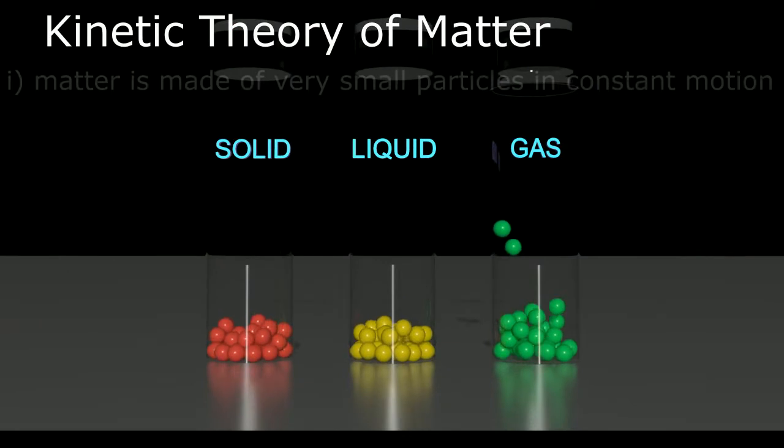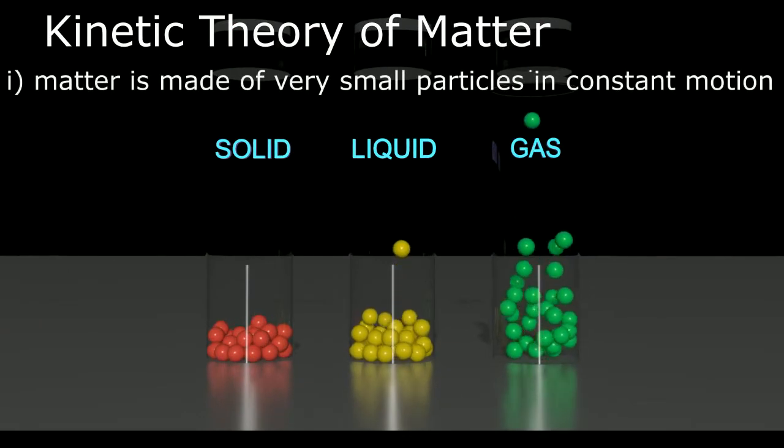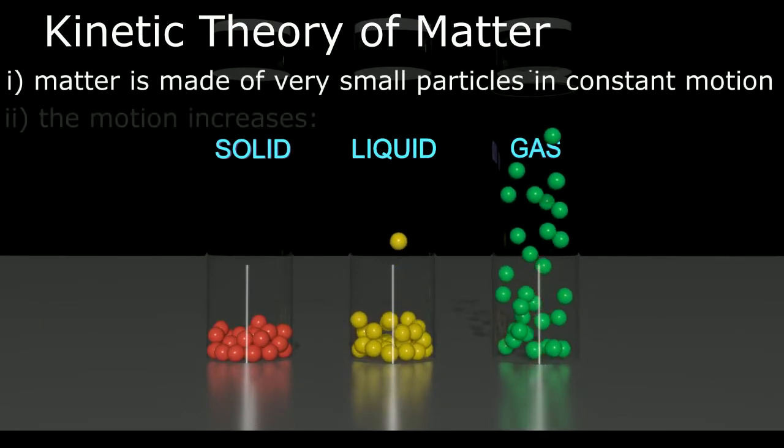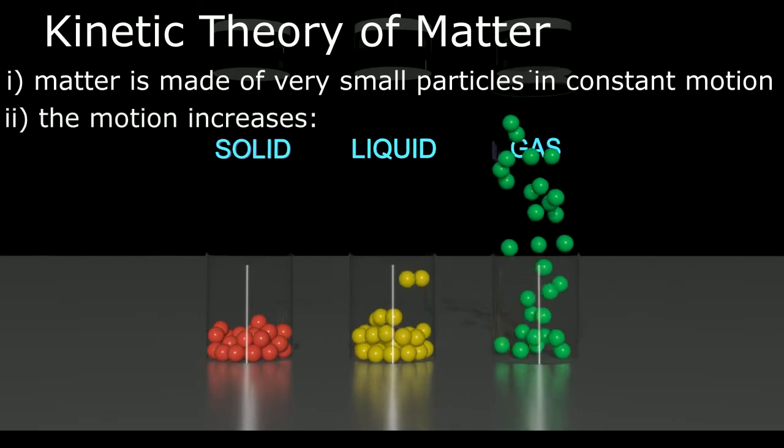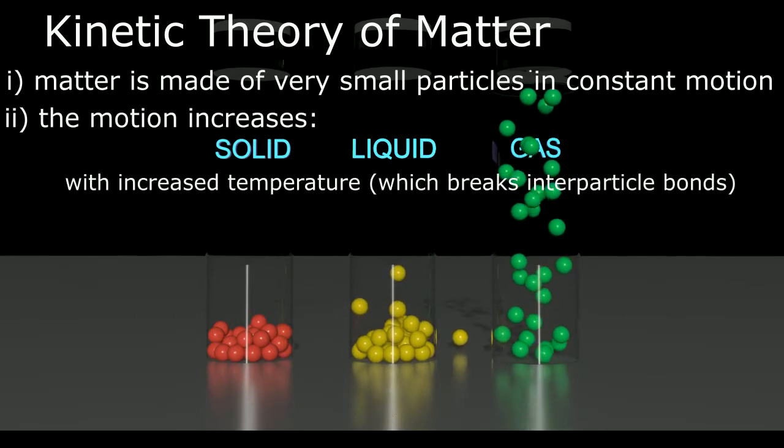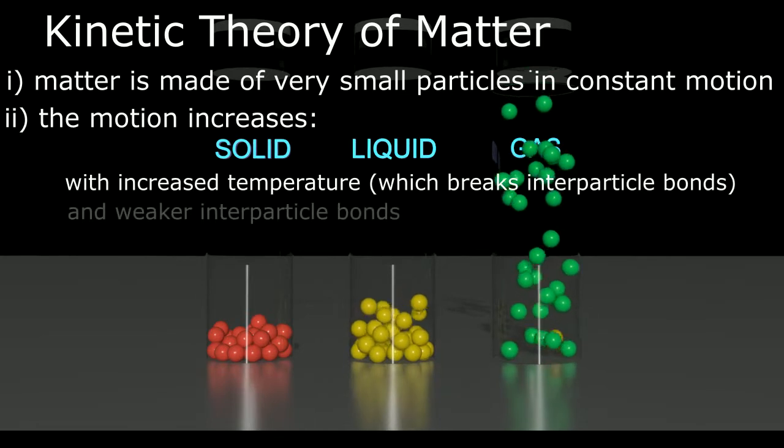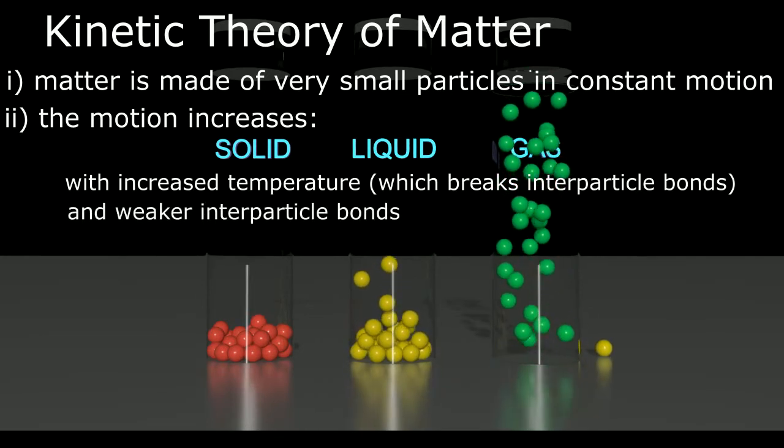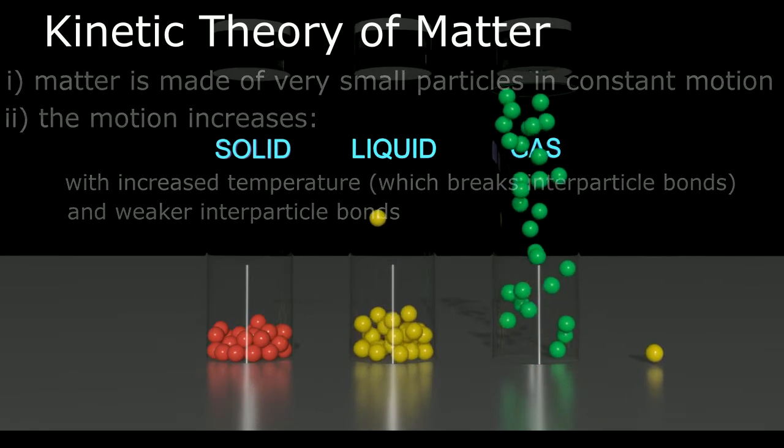Kinetic theory of matter assumes that matter is made of very small particles in constant motion, and that motion will increase if you increase the temperature, because that will break those inter-particle bonds, or you could even have weaker inter-particle bonds. Both of those will increase motion.